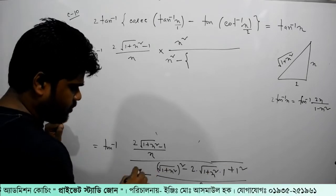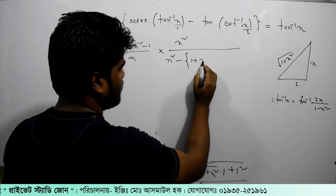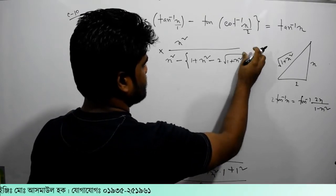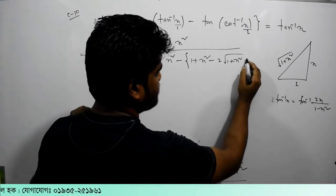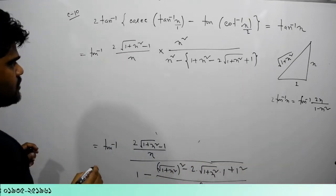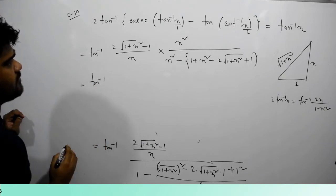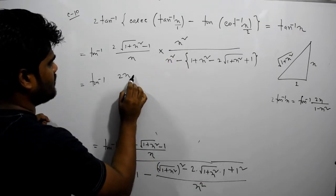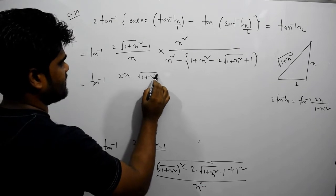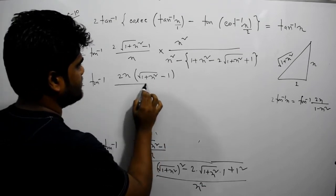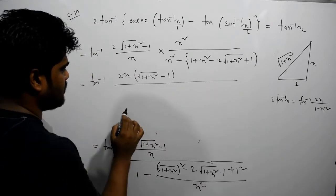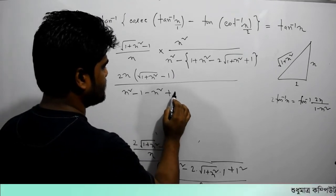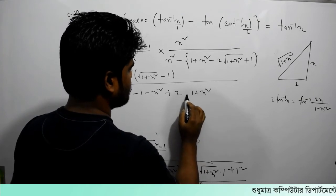1 plus x squared, then minus 2 root over 1 plus x squared, then minus 1 plus 1 plus 1. So this calculation will be done. This is 1x squared minus 1x squared minus 1. This is 1x squared minus, then 1x squared plus 2 times 1 plus x squared root over minus 1.